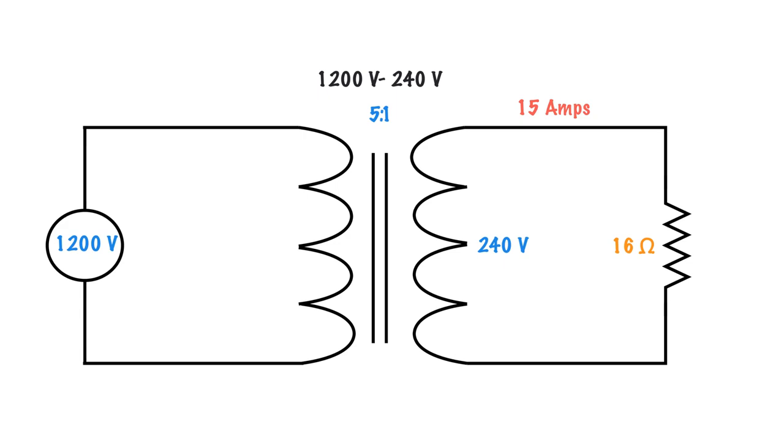Now this is where we can start using the turns ratio. We have 15 amps on the secondary and we have 240 volts on the secondary. We have 1200 volts in the primary. We need to remember that lower voltage means higher current, and higher voltage means lower current.